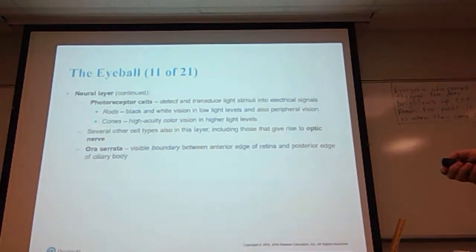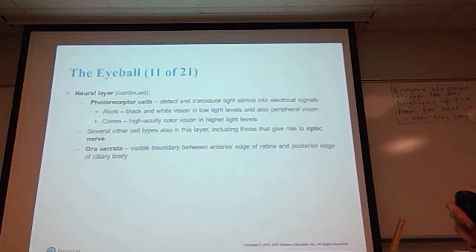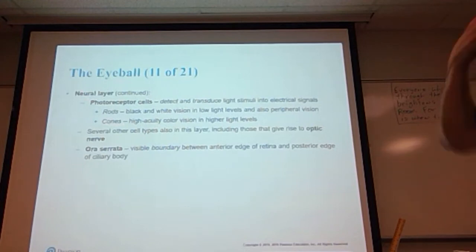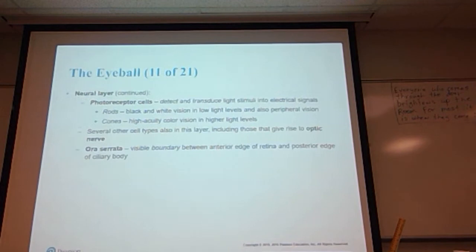Someone may have told you that at some point in your life. Dogs are not technically colorblind, but they do not see in as many colors as you and I do. The reason they do not see in as many colors as we do is because of the number of cones that they have. The rods are good for black and white vision, and again cones provide high acuity color vision. The more cones you have, the more different colors you can differentiate. If you've ever seen an artist's color wheel, there's like 50 different shades of blue. Well, if you don't have very many cones like a dog, all of those shades of blue look pretty much the same. There are several other types of cells found in the neural layer, including those that give rise to the optic nerve. The ora serrata is the visible boundary between the anterior edge of the retina and the posterior edge of the ciliary body. That's what we meant on this previous slide—that it was an incomplete layer because it doesn't go around the complete inner surface of the eyeball. It's only found on the back two-thirds to three-quarters of the eyeball.